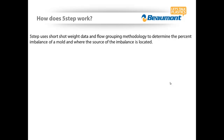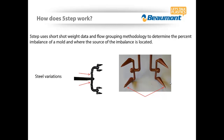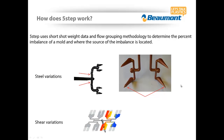How does the 5-step actually work? The 5-step uses short shot weight data and something called flow grouping methodology to determine the percent imbalance of a mold and the source of that imbalance. It breaks it down into two categories. Category one is steel variations — for example, a runner that is offset or gates that are off. Any physical imperfections in the mold can be considered a steel variation. And finally, a shear variation, which is an imbalance due to the natural flow of the plastic and the shear heating that happens as plastic travels through the runner system.